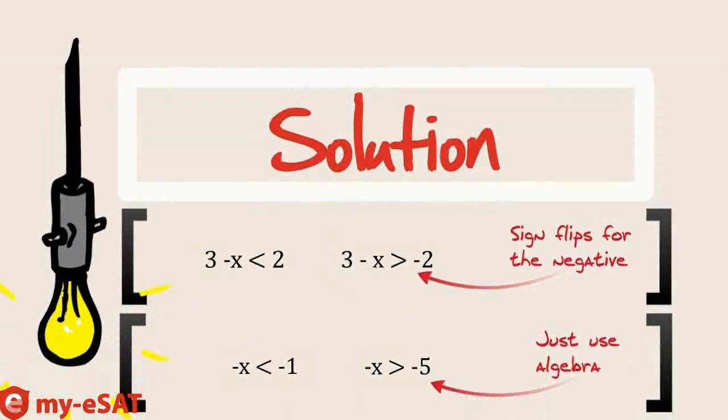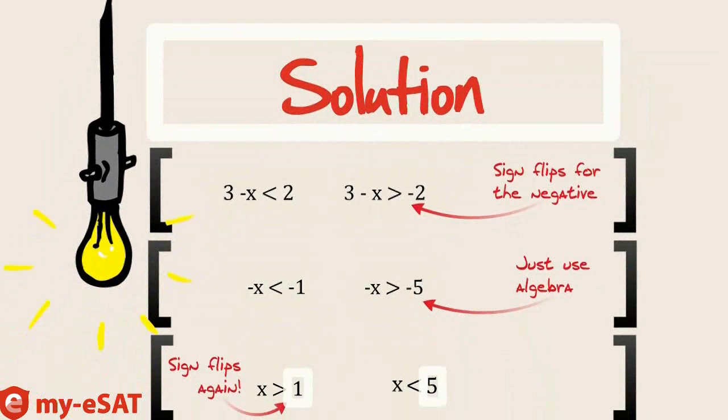Okay, that's the tricky part. Now let's just solve using algebra. You end up getting x > 1 for the first piece, and x < 5 for the second piece.